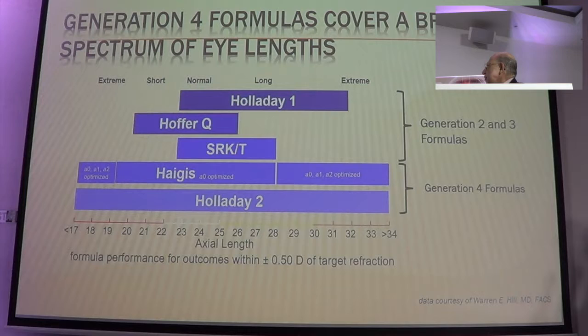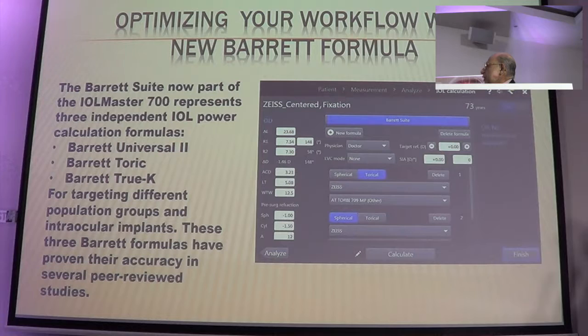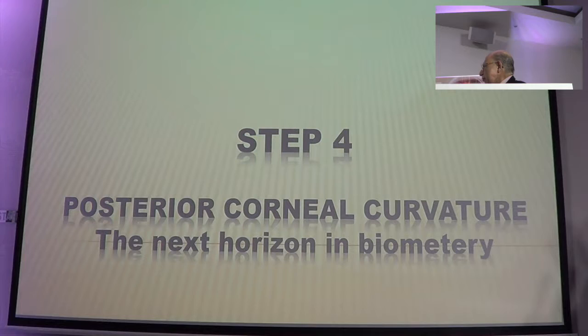Something you need to look at. Of course you need to use newer formulas. The generation core formulas cover a broad spectrum. But what I have now started using since the last few months is the Barrett suite, which utilizes universal loading and the 2K formula. These are certainly much more accurate in India.